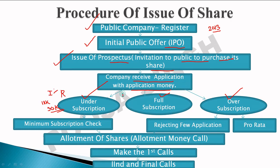Full subscription means the company floated 1 lakh shares and received exactly 1 lakh applications — that is full subscription. Over-subscription means the company is very renowned, and more applications come in than shares issued — for example, 1 lakh shares floated but 1.5 or 2 lakh applications received. These are the three cases of subscription.